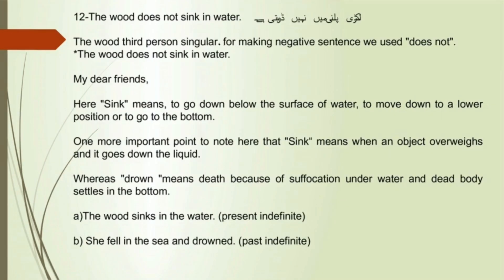Sentence 12: The wood does not sink in water. 'The wood' is third person singular, so for making the negative sentence, we use the negative auxiliary 'does not.' The wood does not sink in water. Sink means to go down below the surface of water, to move down to a lower position, or to go to the bottom. Note that sink means when an object overweighs and goes down in the liquid, whereas drown means death because of suffocation underwater, and the dead body settles at the bottom. For example: the wood sinks in water — Present Indefinite. She fell in the sea and drowned — Past Indefinite.